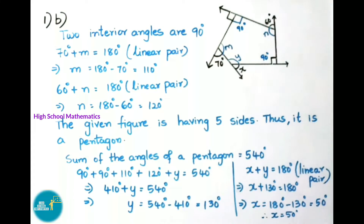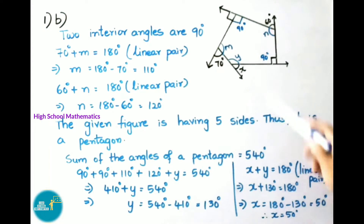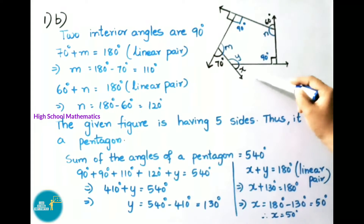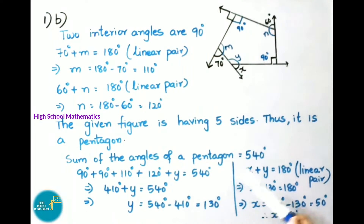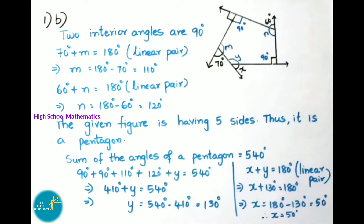The given figure has five sides, so it is a pentagon. The sum of the angles of a pentagon is 540 degrees. For X we take the linear pair angle Y. The five interior angles are: 90, 90, M = 110, N = 120, and Y. Their sum equals 540. So 410 plus Y equals 540, giving Y equals 130 degrees.